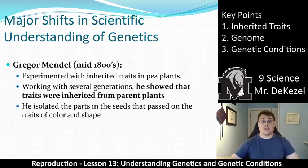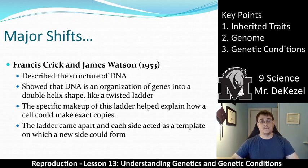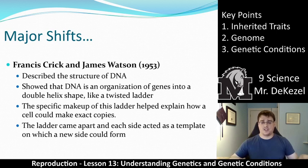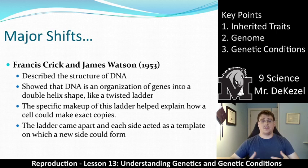Any reproduction that involves meiosis, essentially. Along came Francis Crick and James Watson quite a while later, and they used some very interesting techniques to describe the structure of DNA. They showed that DNA is an organization of genes, and that the traits Mendel was describing were inherited through DNA and chromosomes — these traits were passed on from parents through DNA.